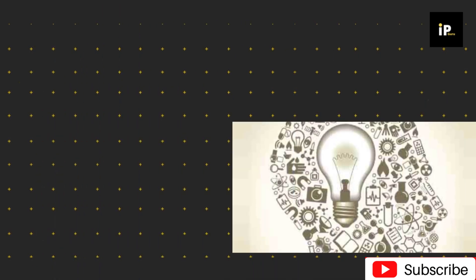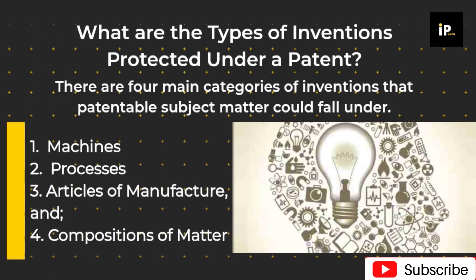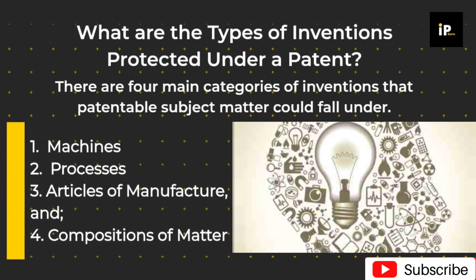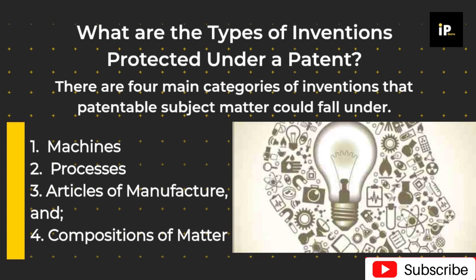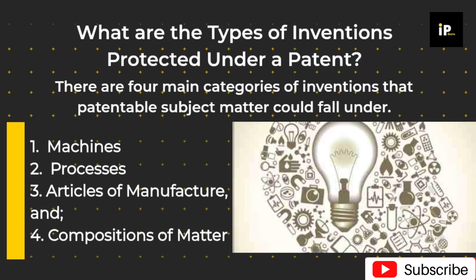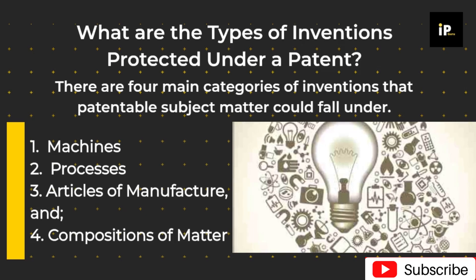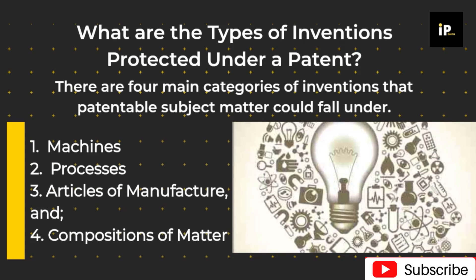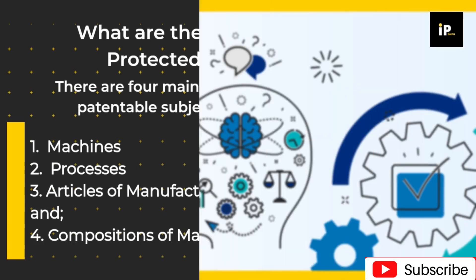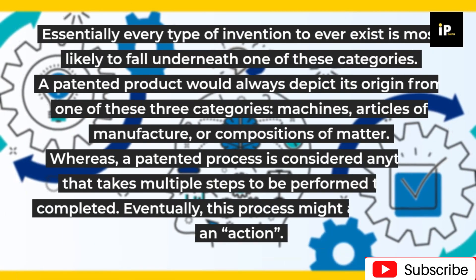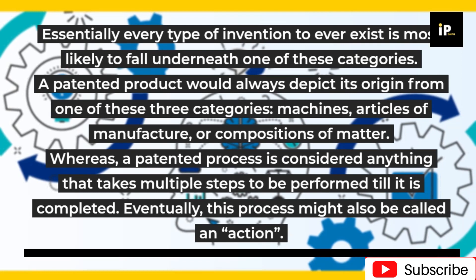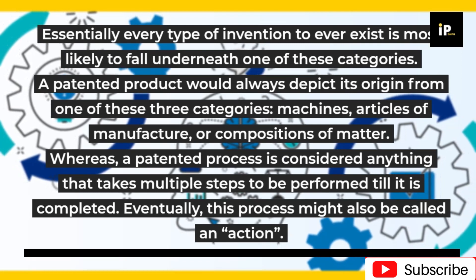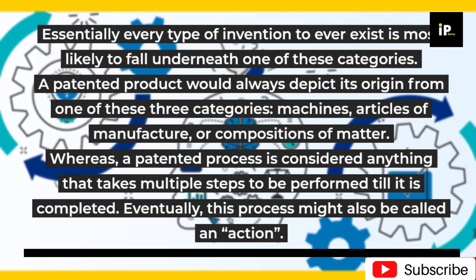What are the types of inventions protected under a patent? There are four main categories of inventions that patentable subject matter could fall under: one, machines; two, processes; three, articles of manufacture; and four, compositions of matter. Essentially every type of invention to ever exist is most likely to fall underneath one of these categories.